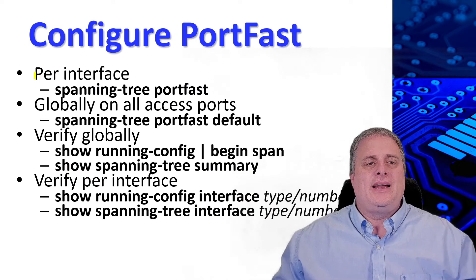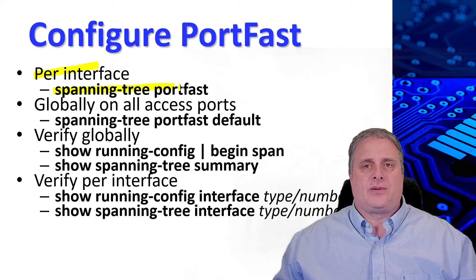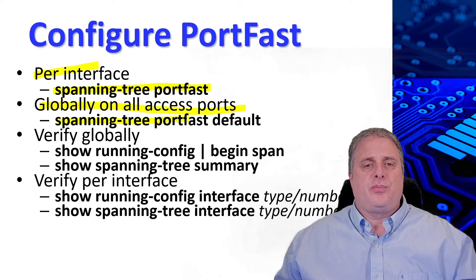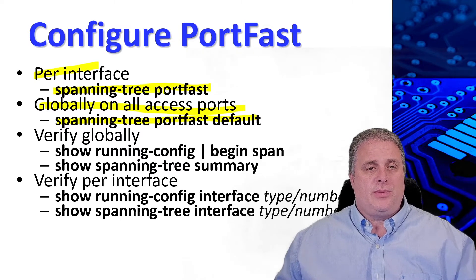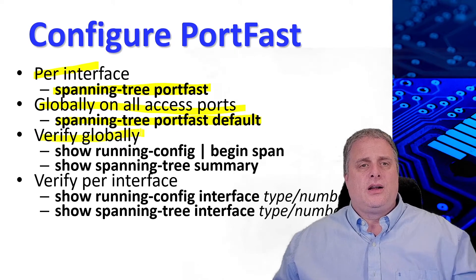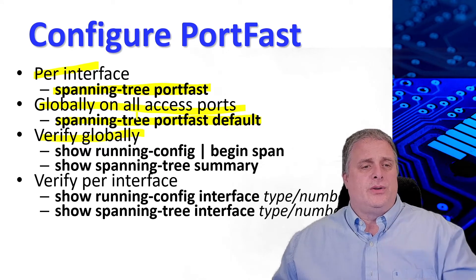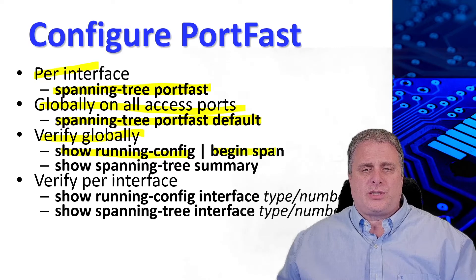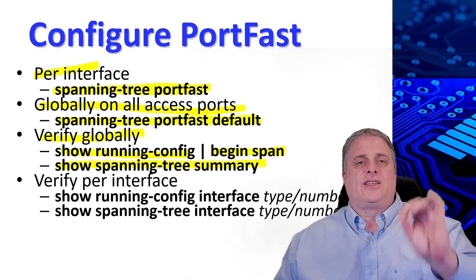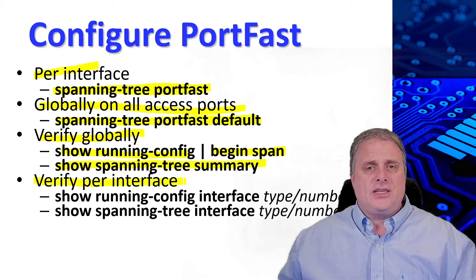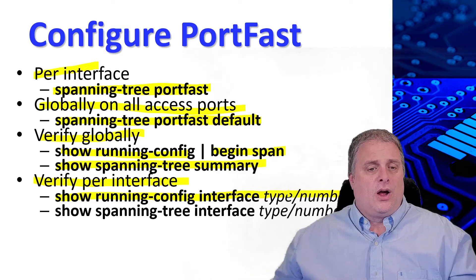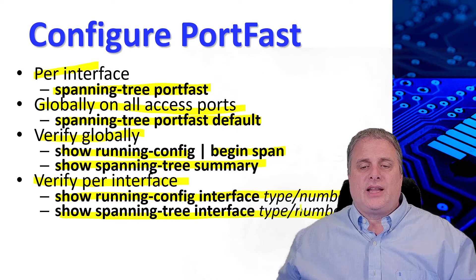PortFast can be enabled on an interface by using the spanning tree PortFast command. Alternatively, PortFast can also be enabled globally on all ports by using the spanning tree PortFast default command. On a per interface basis, you need to be in an interface or range of interfaces. For global configuration, you're in global configuration mode. To verify whether PortFast is enabled globally, you can either use the show running command and look for any lines that begin with span for spanning tree, or you can use the show spanning tree summary command. For a per interface check, use show running config interface followed by the interface name, or show spanning tree interface for the details of that interface.